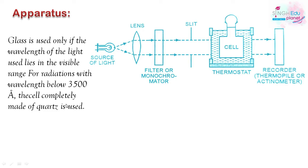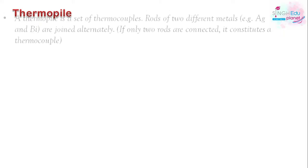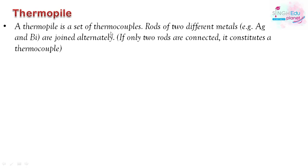This point often comes in exams, so it is important to remember. The last component is the radiation recorder, which is usually a thermopile or actinometer, used to measure the intensity of radiation. Let's now look at what a thermopile is.